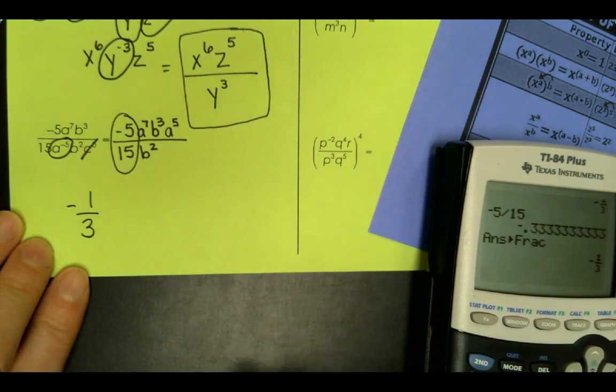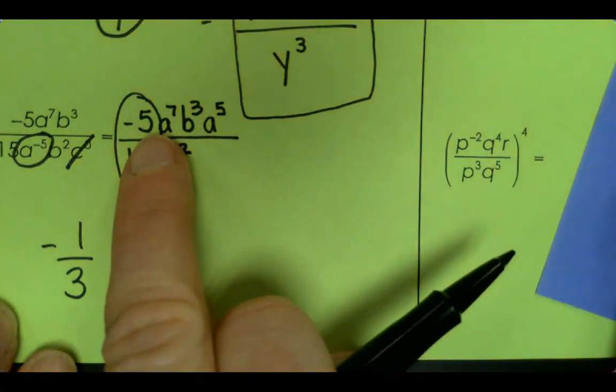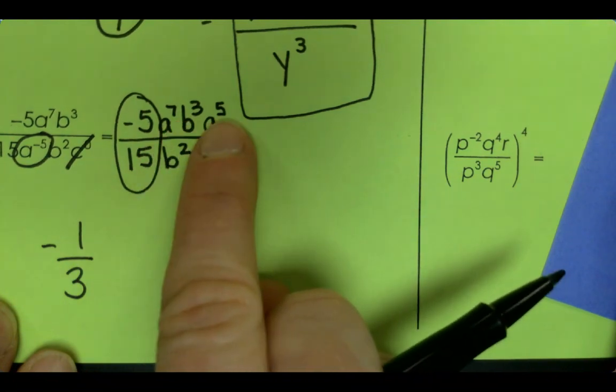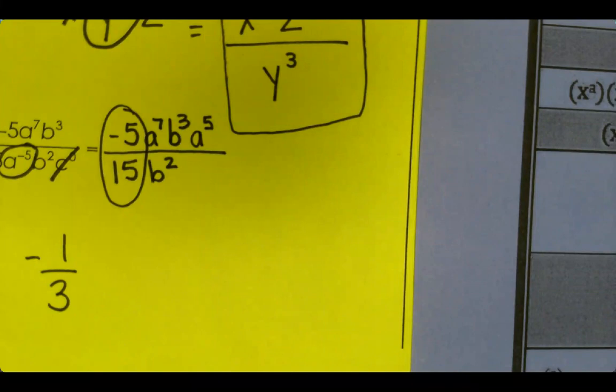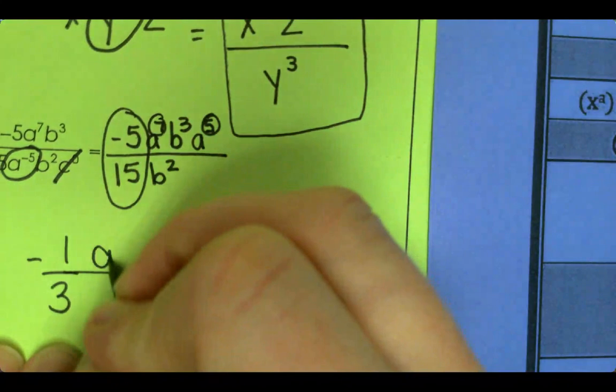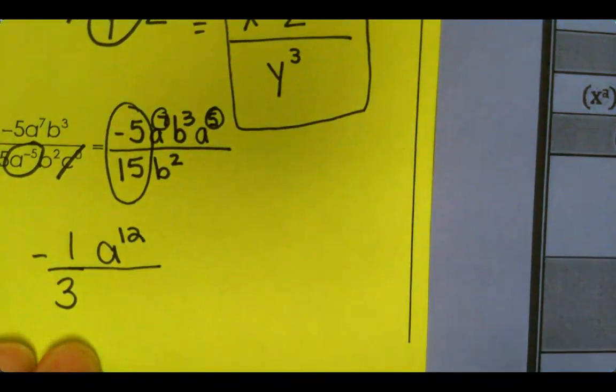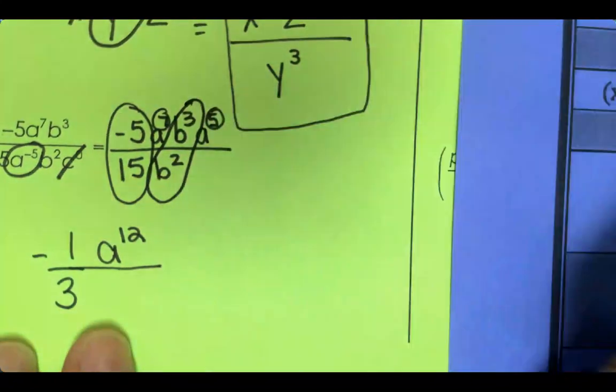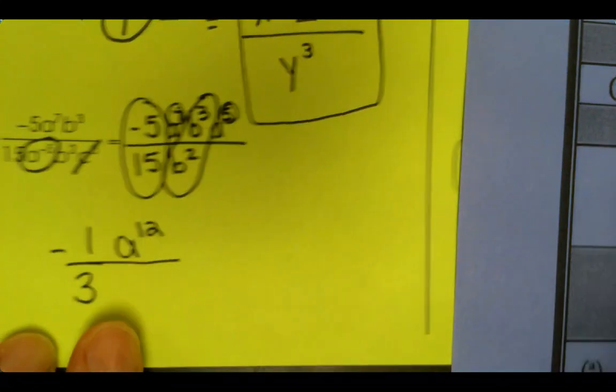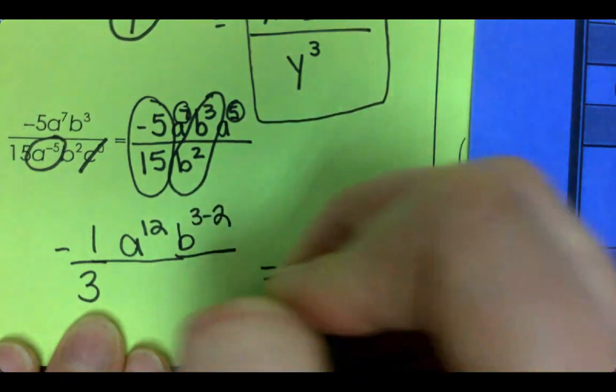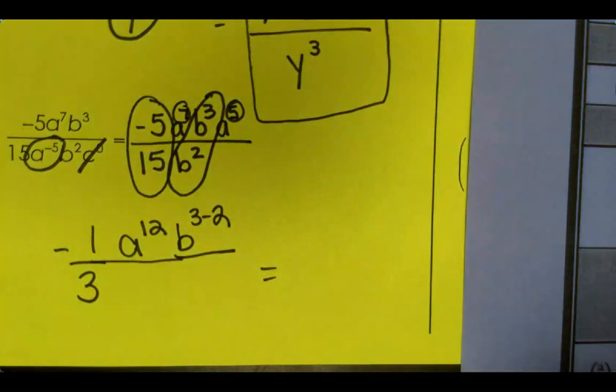Now we want to combine A's and B's. So the A's are on top together, so they're being multiplied. I'm going to add my exponent. So that means I'm going to add the 7 plus the 5. So that's A¹² on top. 7 plus 5 is 12. And then B³ and B². I'm going to subtract those. So go ahead and write it. B³ minus 2.